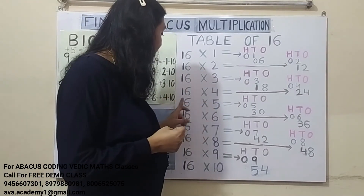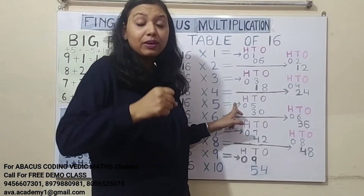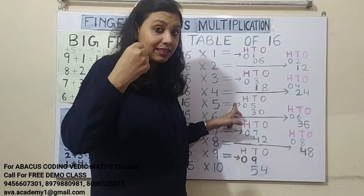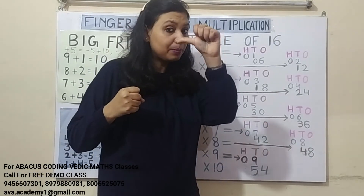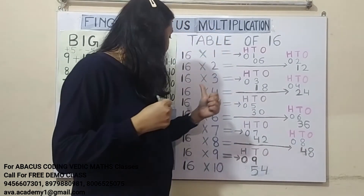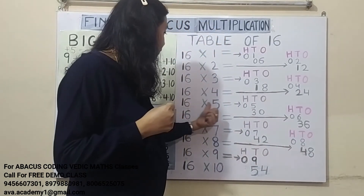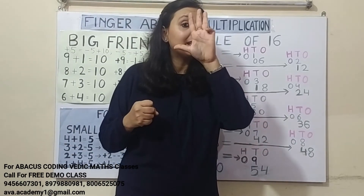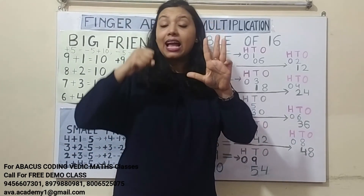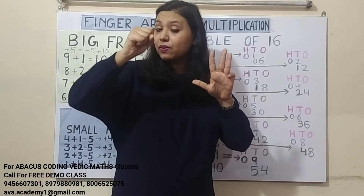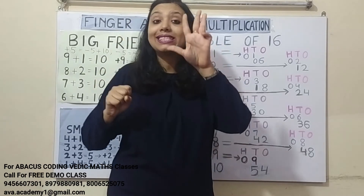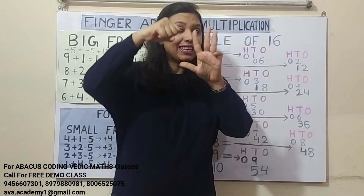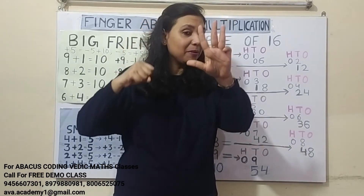16 fives are: 1 fives are 5 — in 100's we represent 0, and in 10's we represent 5. 6 fives are 30 — in 10's we represent 30, and in 1's we represent 0. So the answer is 80.